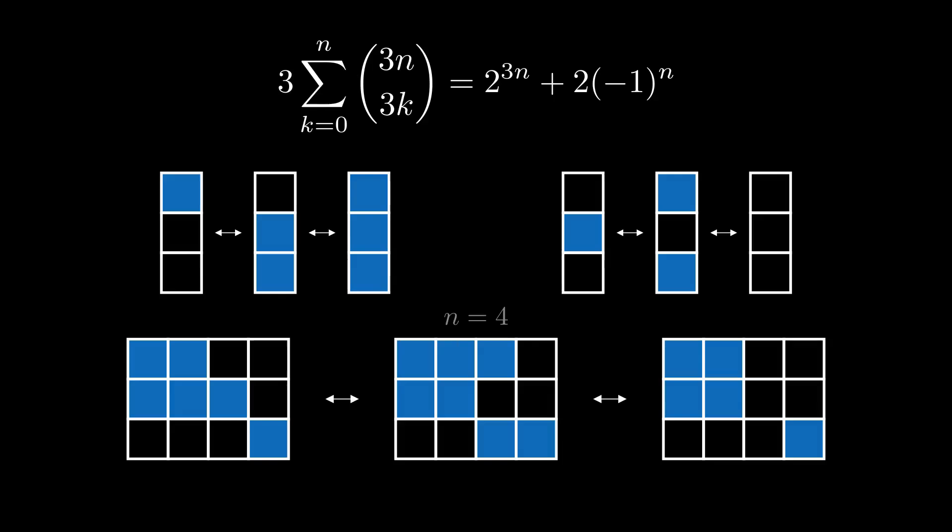By construction, when we swap a column, we leave everything outside that column alone, so we produce two new configurations, which each differ from the first by 1 mod 3. Looking at this one column alone, we can't know which configuration is in A0 or A1 or A2, but we know they're all in different sets, so we do have a little triangle of matching.